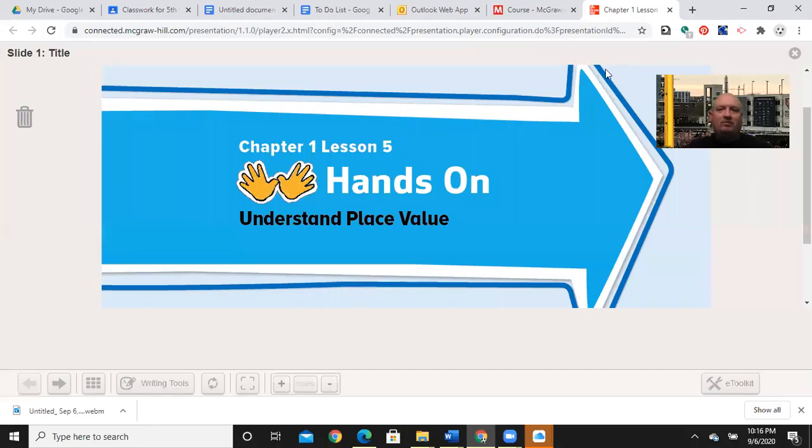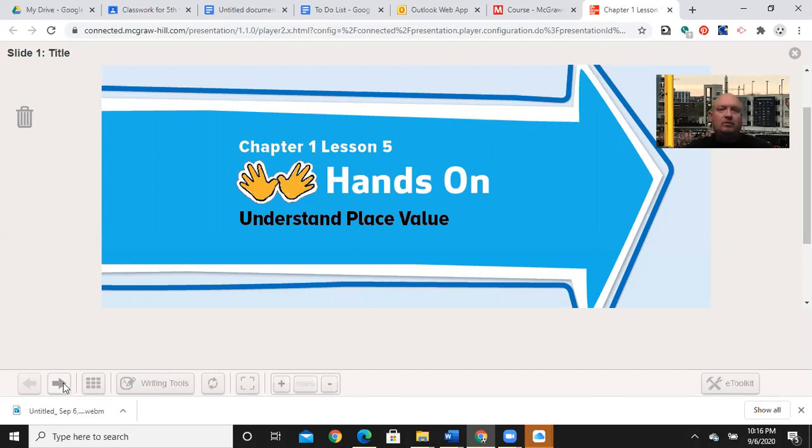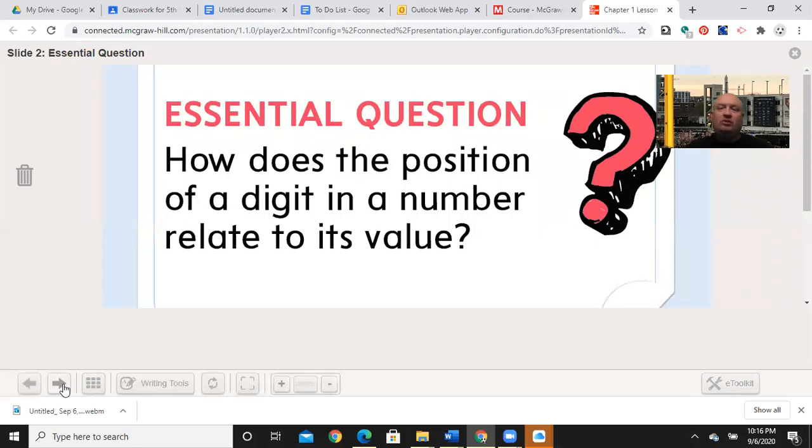We're back here in Chapter 1, Lesson 5, Hands-On Understanding Place Value. We've been looking a lot at what decimals would be as fractions and vice versa. The essential question in Chapter 1 remains, how does the position of a digit in a number relate to its value? We now know that a seven in the hundreds place has a far different meaning than a seven in the hundredths place.